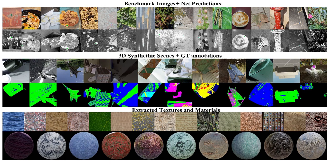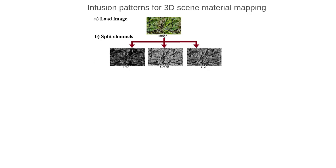On the other hand, synthetic data, although accurate and inexpensive, lacks real-world diversity. This work aims to bridge this gap by infusing patterns automatically extracted from real-world images into synthetic data. Hence, patterns collected from natural images are used to generate and map materials into synthetic scenes. This unsupervised approach captures the complexity of the real world while maintaining the precision and scalability of synthetic data.